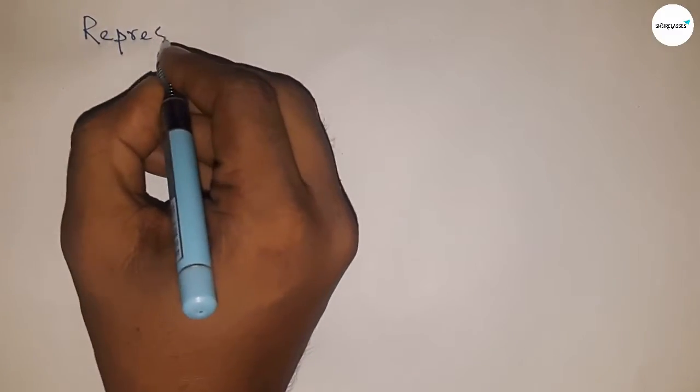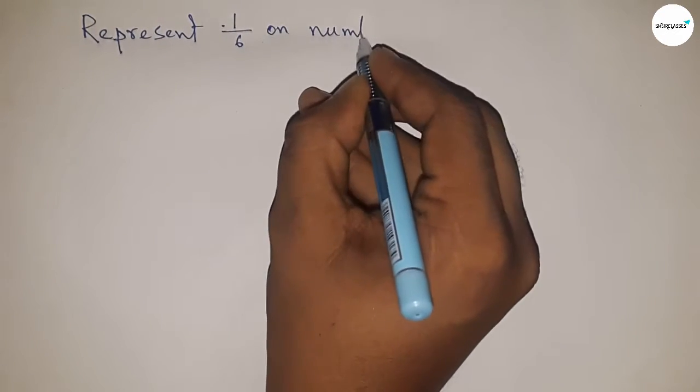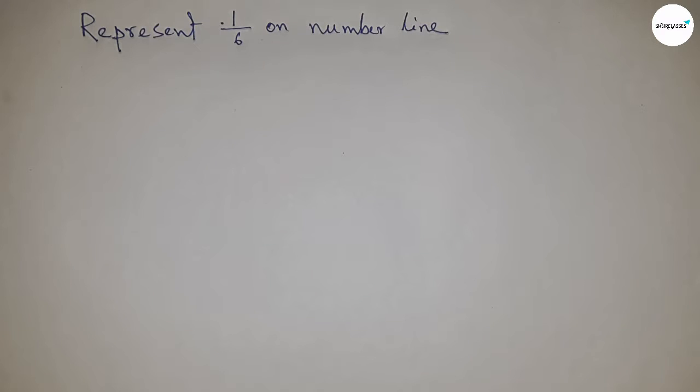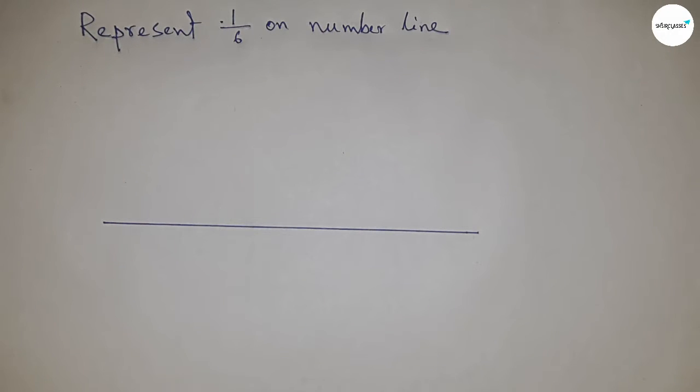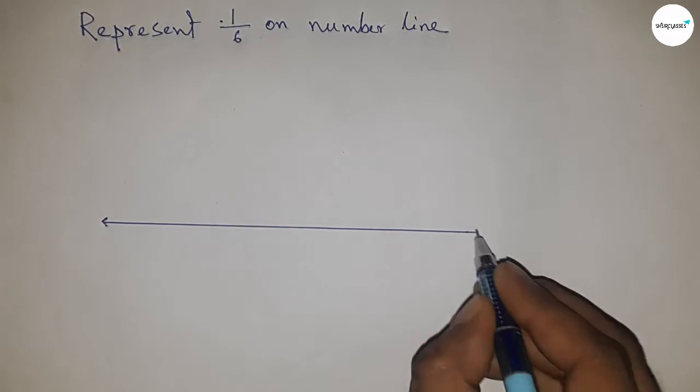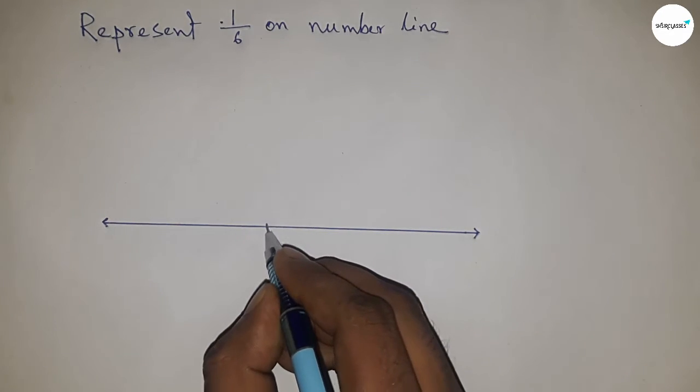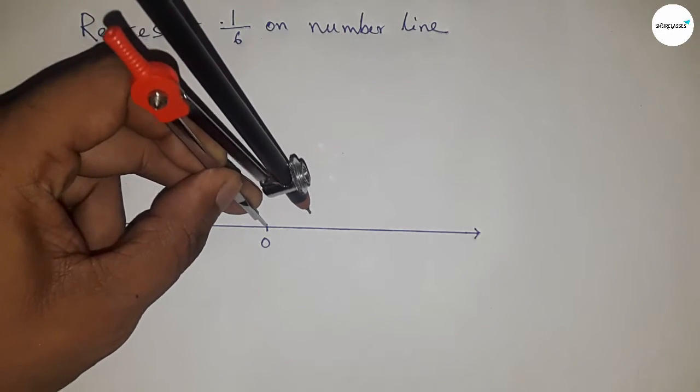Hi everyone, welcome to SSR classes. Today talking about how to represent 1/6 on a number line. So let's start. First of all, have to draw the number line - so first drawing a line of any length and mark the ends with arrows. Next, taking here the number zero here.